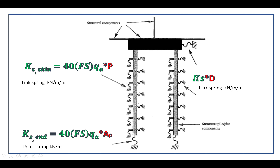In the case you use Ks multiplied with D, you can apply a line spring. For the end bearing spring you use the formula: Ks multiplied by the cross-sectional area of the pile. For the line spring you use Ks multiplied by the perimeter of the pile. For the lateral spring you use Ks multiplied by D. If you use the limit Ks for the end of the pile, you can apply it as a line spring, node spring, or point spring.